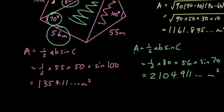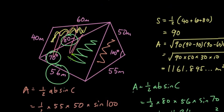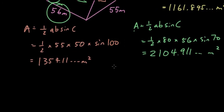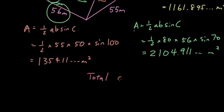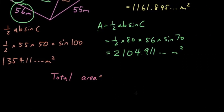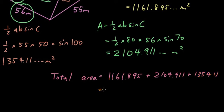So the total area, the whole thing added together is going to be total area equals the three areas added, 1,161.895 plus 2,104.911 plus 1,354.11. Add them all together and you will get 4,620.92 meters squared rounded to 2dp. So that is how you find the area of polygons with more than three sides. Thanks for watching guys. See you next time.